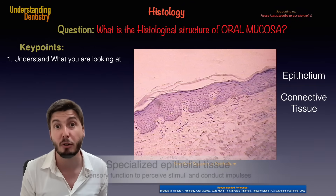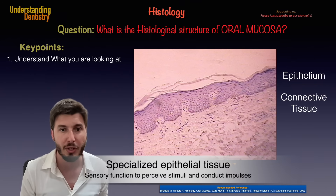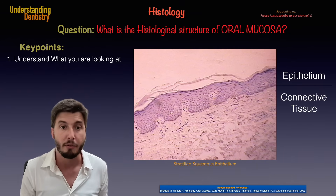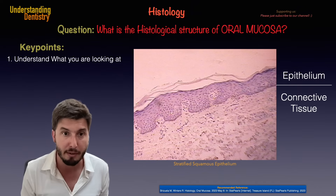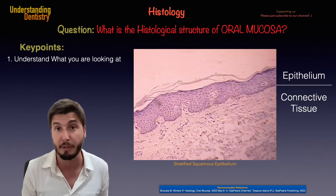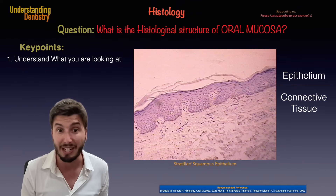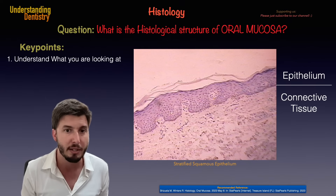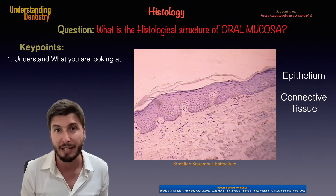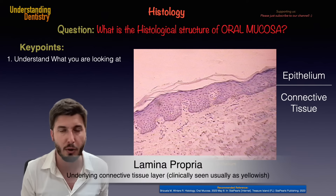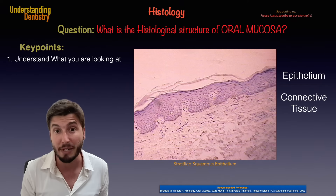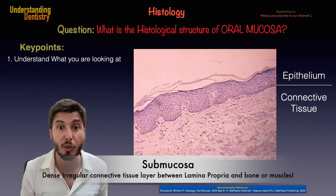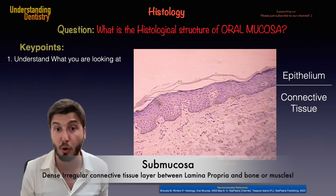We also have the specialized epithelium, which is the one of the tongue. The oral mucosa is basically composed by an epithelium with epithelial cells disposed in layers, and then we have the connective tissue underlying, which is called lamina propria. We may also have a deeper irregular connective tissue layer called submucosa.